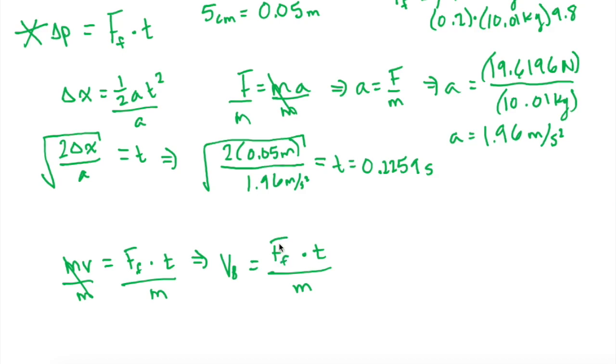And just remember, in case we forgot what we were talking about at the beginning, the reason we can use just the mass and the velocity, or just the momentum of the bullet, is because in this case, the momentum of the bullet equals the total momentum of the system because the block was originally at rest. So now let's plug in our numbers. And the friction force was 19.6196 newtons times the time, which was 0.2259 seconds. And that all divided by the mass of the bullet, which we said is 0.01. And we plug that in.